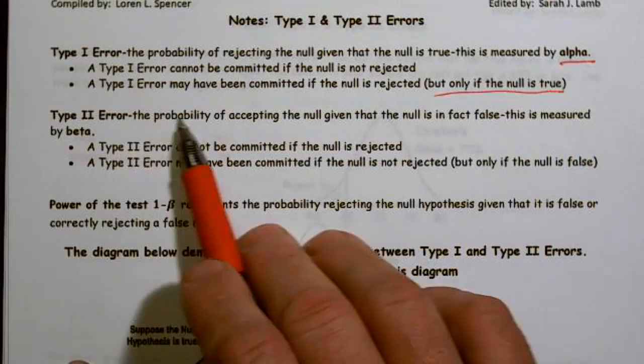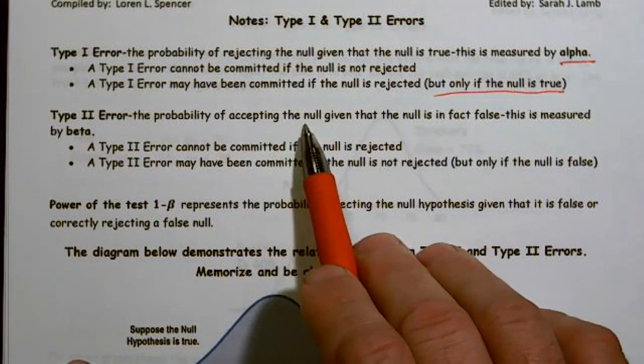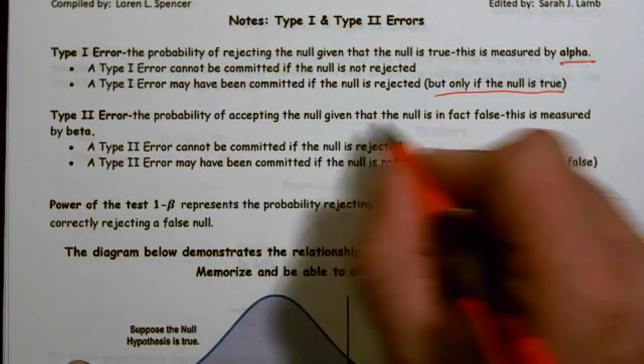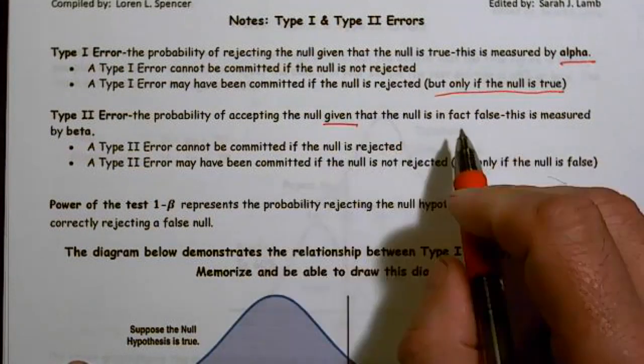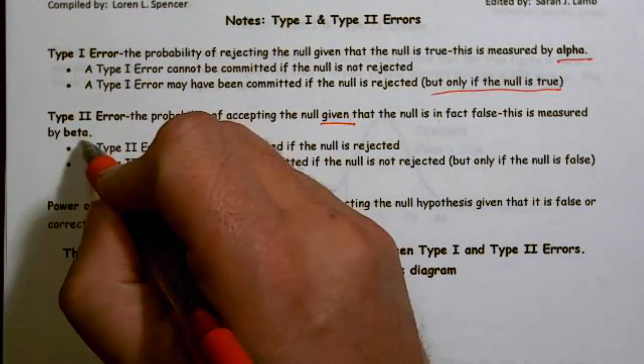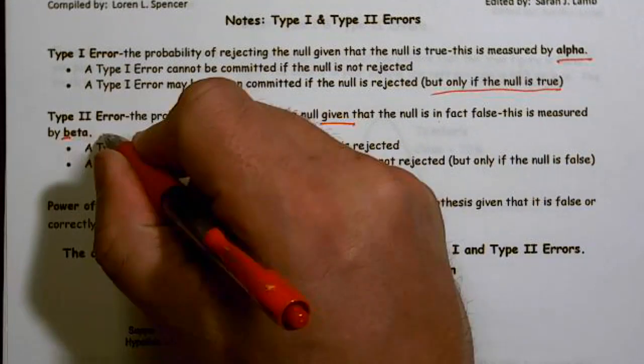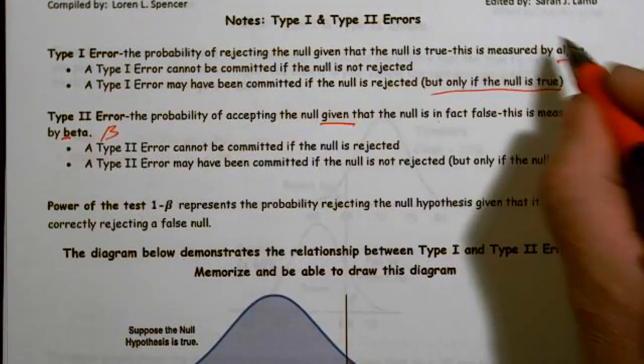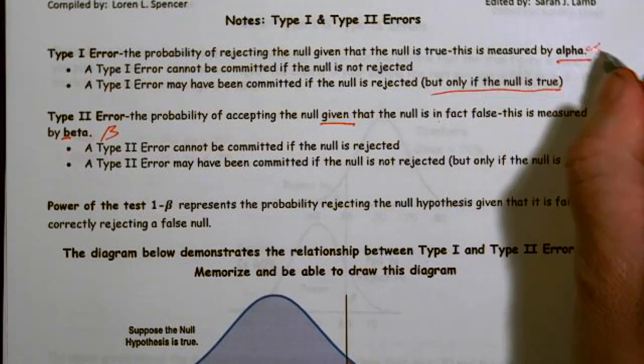A type two error is the probability of accepting the null given that the null is in fact false. Once again, there's a given statement, and because it's given, it's a conditional probability. Once again, this is measured by beta.